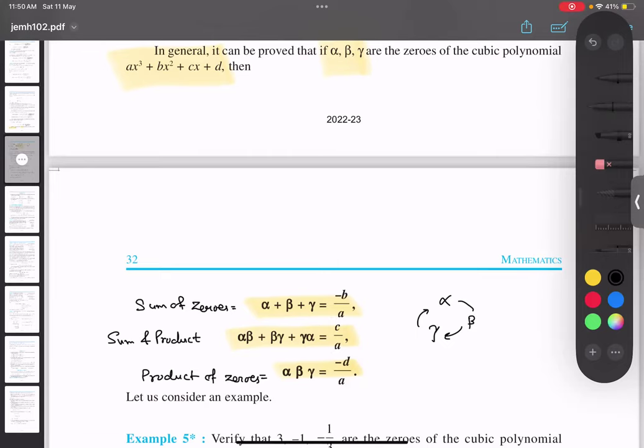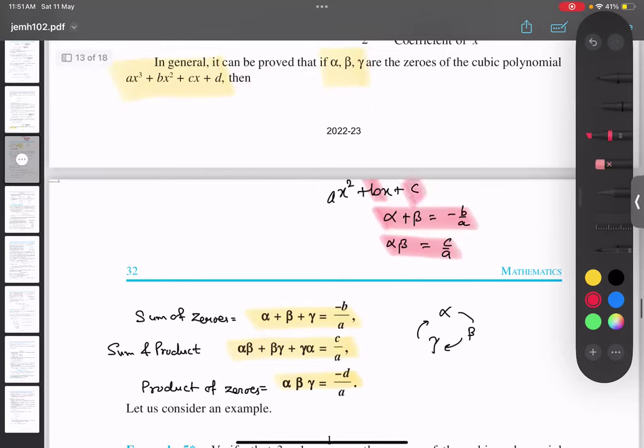So, finally note down this thing, I will be asking you. If you remember the quadratic, Ax² plus bx plus c, what was the sum? Alpha plus beta was what? Minus b by a. And alpha beta was what? C by a. Now just observe this thing. Sum is second term and first term minus b by a. Product is last term and first term.